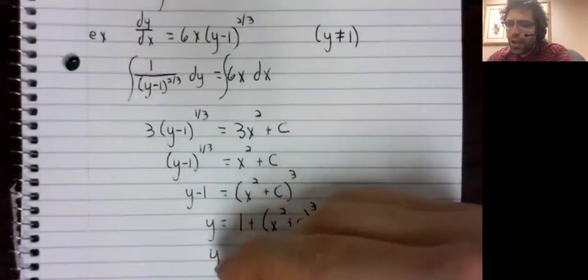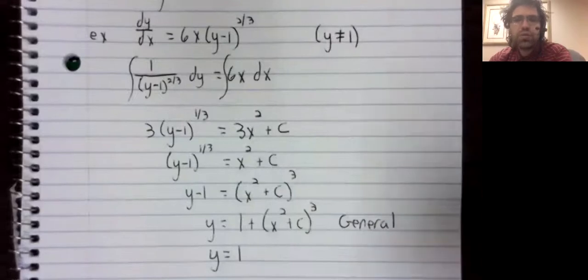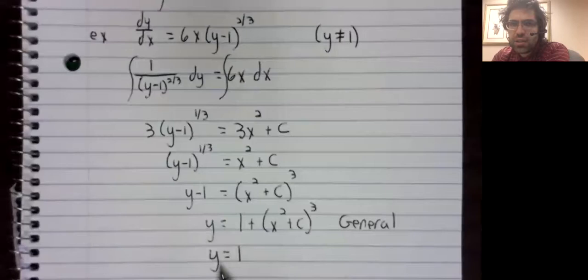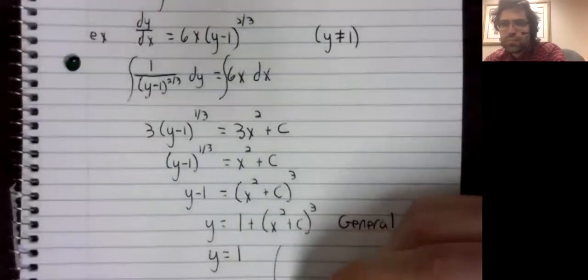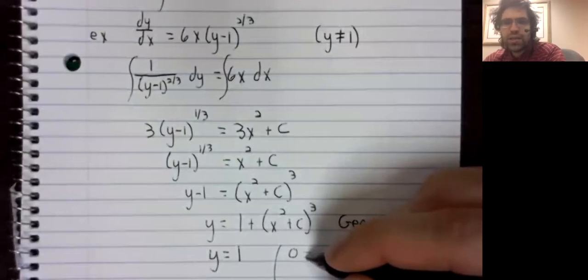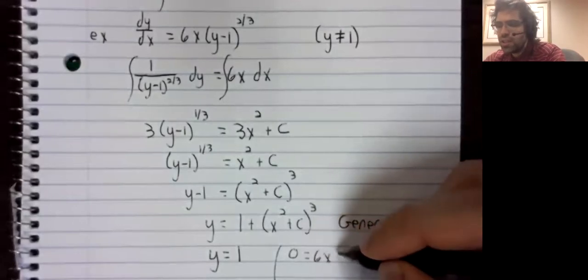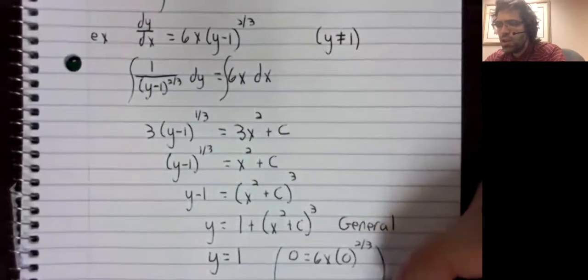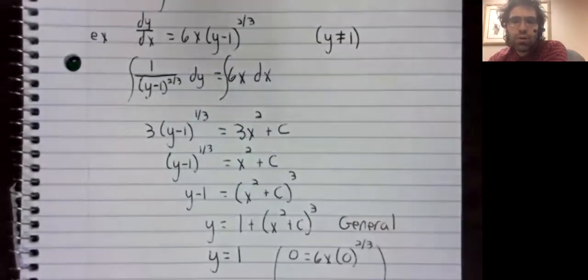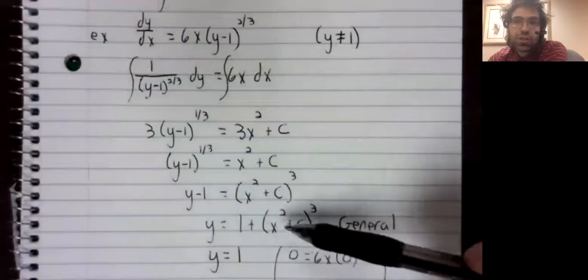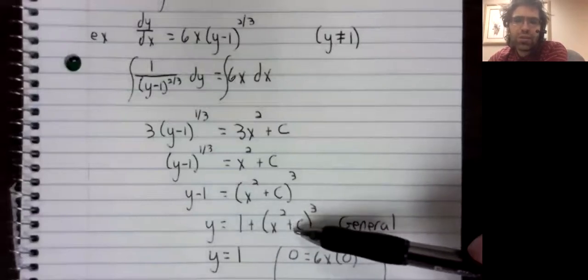Well, as it happens, it's not the most fascinating solution, but y equals 1 is a solution. The derivative of a constant function is 0, and 0 does indeed equal 6x times 0 to the 2/3rds. So this constant function is a solution that is not included in the general class of solutions.